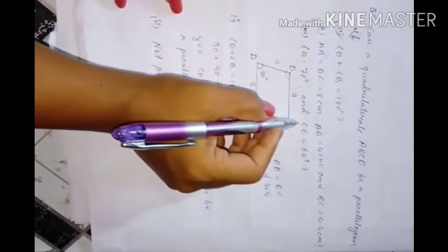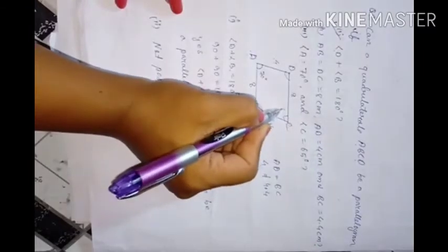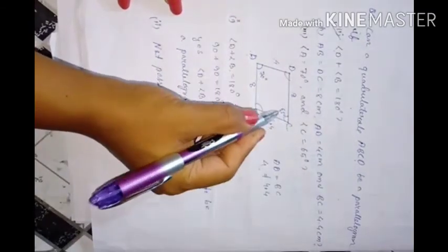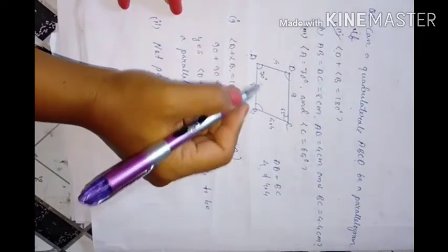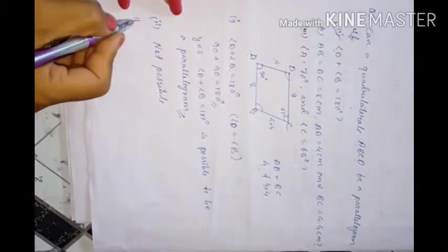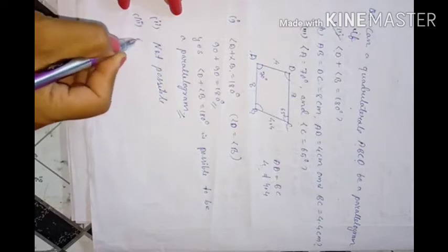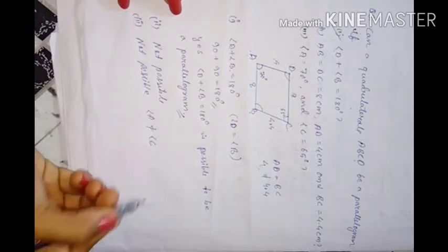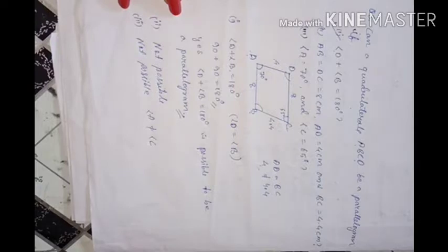Third part: Angle A equals 70 degrees and angle C equals 65 degrees. This is also not possible because in a parallelogram, opposite angles must be equal. Since angle A is not equal to angle C, it cannot be a parallelogram.